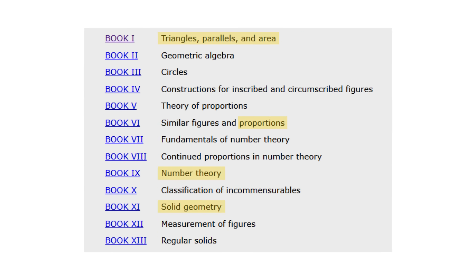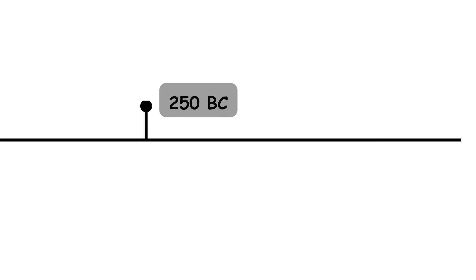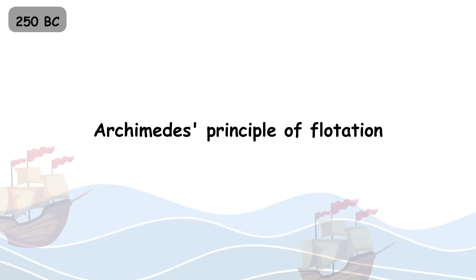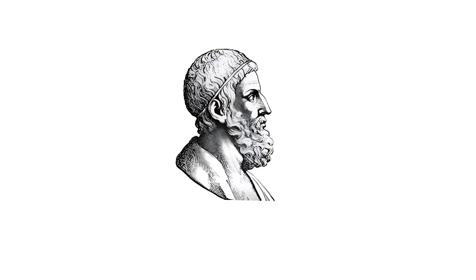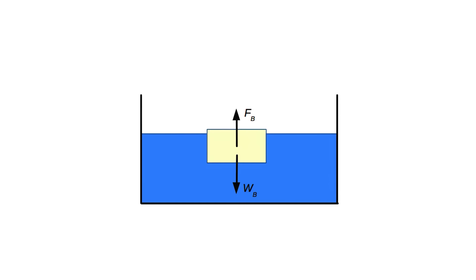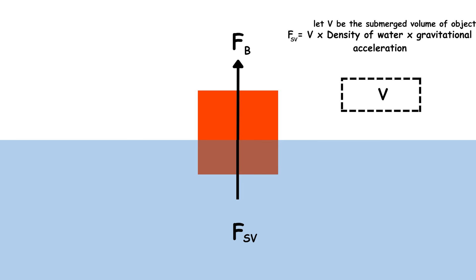250 BC: Archimedes principle of flotation. Archimedes principle explains why objects float or sink based on buoyant force. The principle states that when an object is fully or partially submerged in a fluid, the upward buoyant force acting on it is equal to the weight of the fluid displaced by the object. It is fundamental in physics, naval engineering, and ship design.